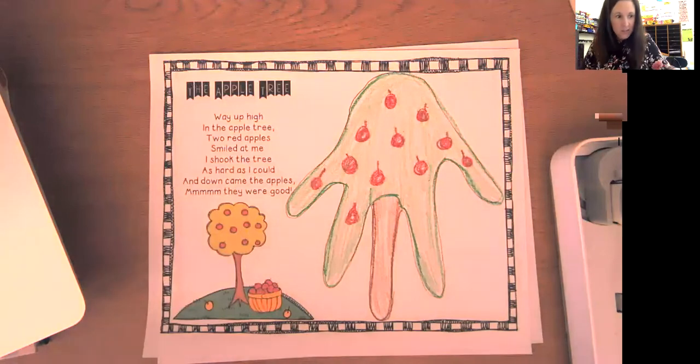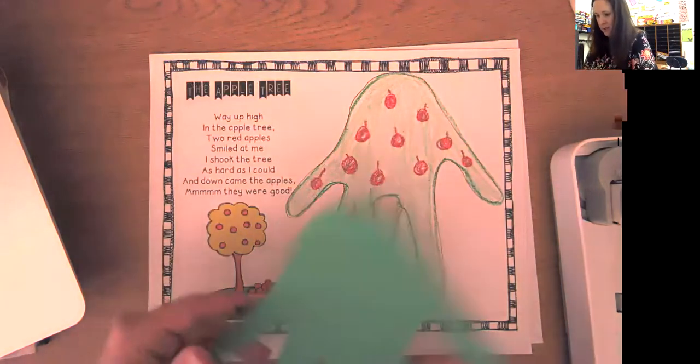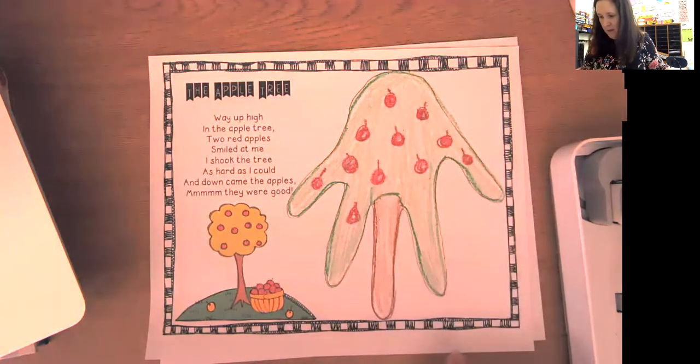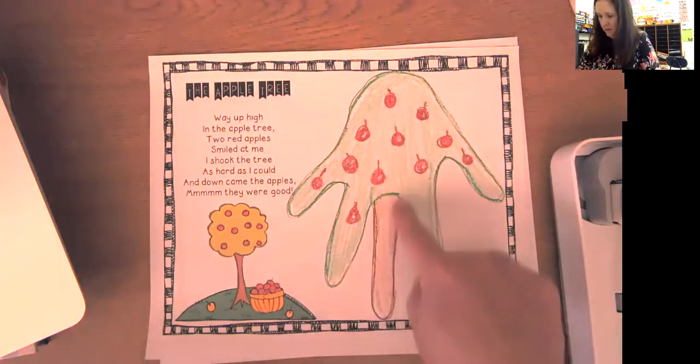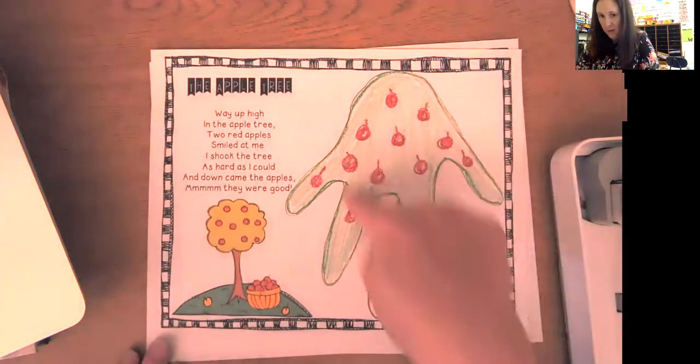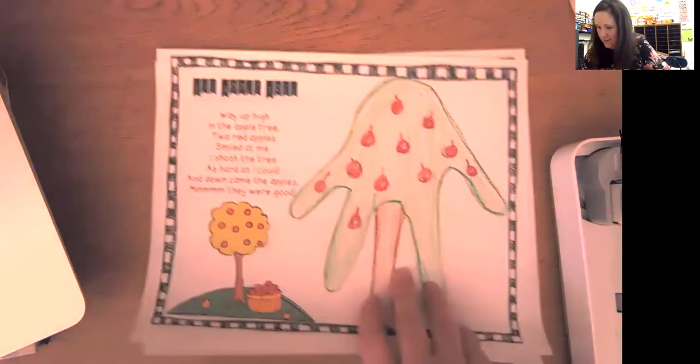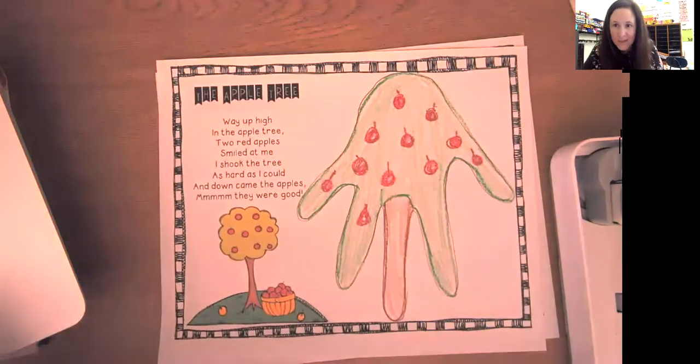So, again, here is the apple tree. So, the first step is trace your hand upside down and color your trunk brown, the tree green, and then add apples. All right, guys. I hope you are having fun doing your calendar. I'll see you soon. Bye, you guys.